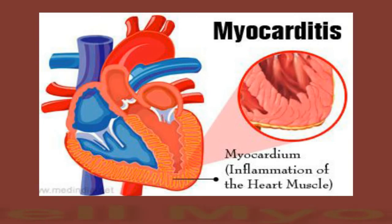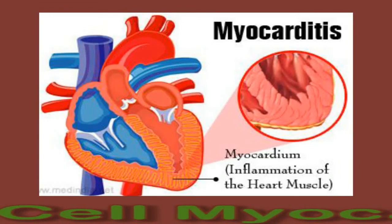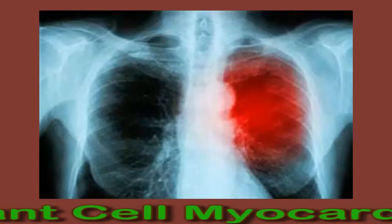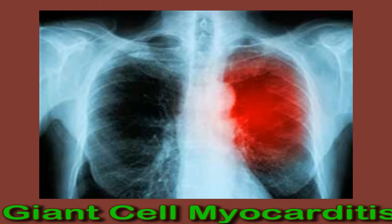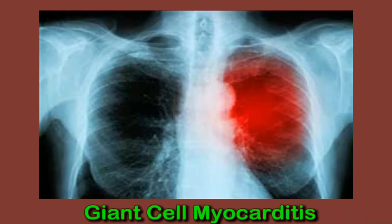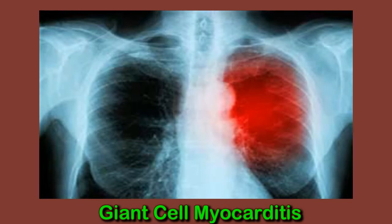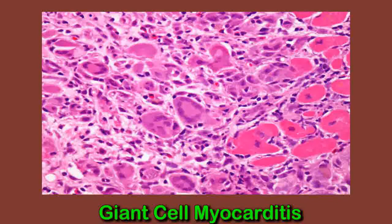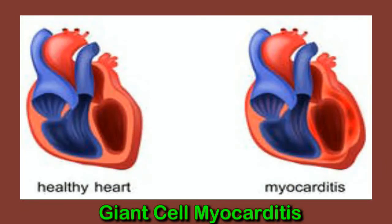Myocarditis occurs when there is inflammation in the heart muscle. Giant cell myocarditis, or GCM, develops when this inflammation results in abnormal growth of cells, which then causes more inflammation, damaging the heart further. Giant cell myocarditis is a very rare medical condition that progresses rapidly. The abnormally large cells it causes are collections of macrophages and lymphocytes, which play a role in inflammation and immune system functioning.